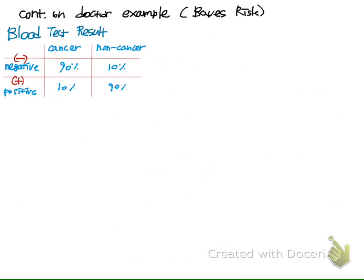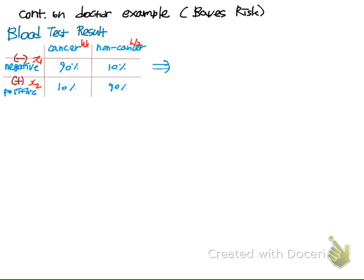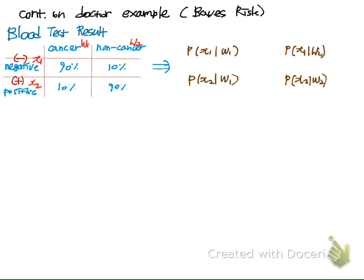We first got test samples from the known classified patients, and we found out that for the negative blood test result, the cancer patient showed 90%, and the non-cancer disease patient showed 10% of negative blood test. From this, we can find the probabilities that we will use in the decision process. We put the negative result into x1, and let the positive be x2. We can find all these conditional probabilities from this analysis.